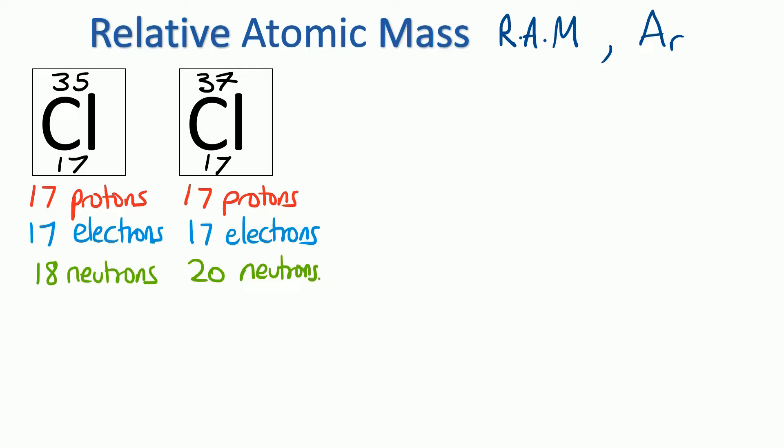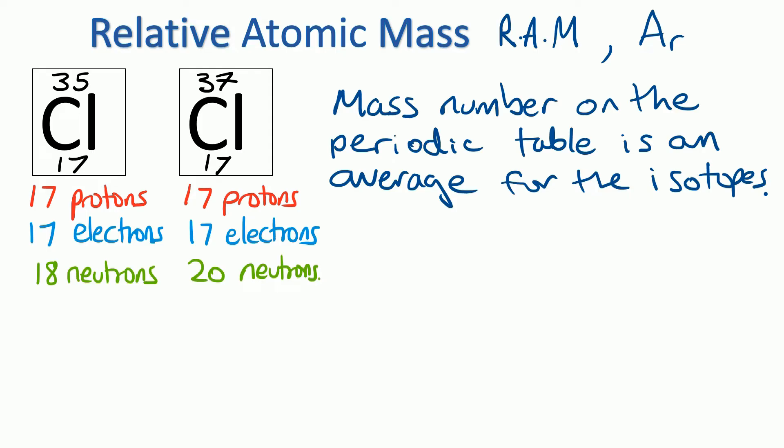Now, the mass number on the periodic table is an average for the isotopes. So for chlorine, you could expect the average to be 36 because it's halfway between 35 and 37. However, on the periodic table if you look at chlorine, the relative atomic mass is 35.5.